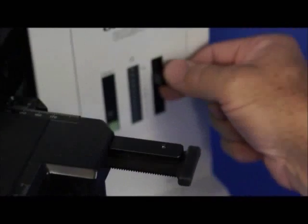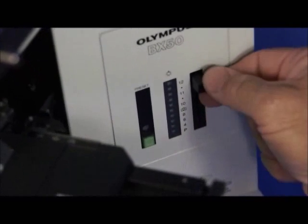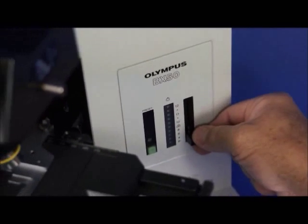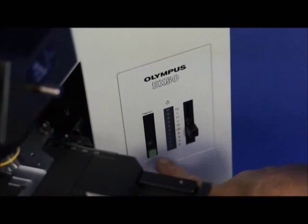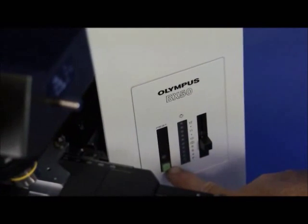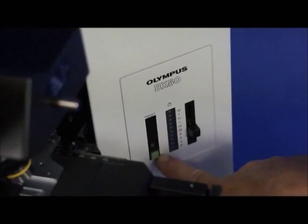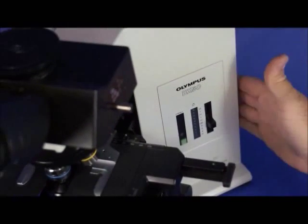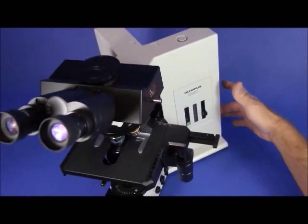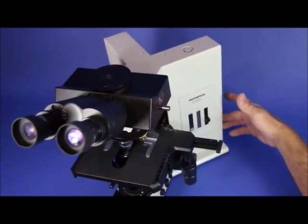Moving back just a little bit, you have an intensity control knob for controlling the intensity on this 12 volt 100 watt halogen lamp. And you also have a preset button which allows you to preset the intensity at a desired position so that when you turn the microscope on each time, it goes to that pre-designated intensity.